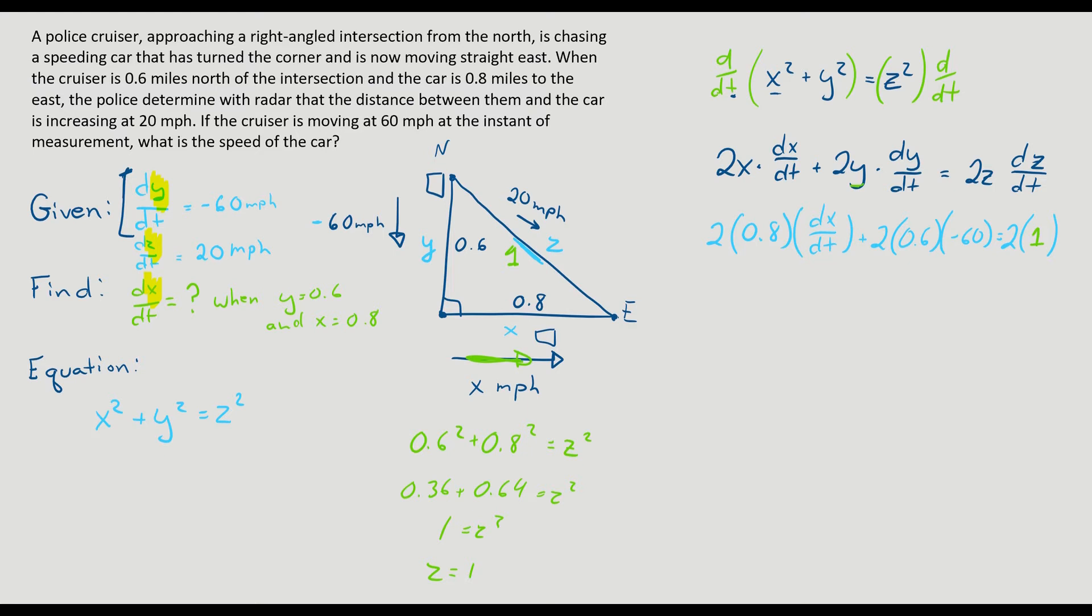And then dz/dt, well, we are given that as 20 miles per hour. Okay, so we only have one unknown, dx/dt, and we're going to solve for that. Let's make this a little easier. Notice I can divide both sides by 2, because it's in common by all of it. So that gives me 0.8 dx/dt. 0.6 times negative 60, that is negative 36. And then I have 1 times 20, which is 20. 0.8 dx/dt is equal to, if I add the 36 over, it equals 56. And then divide by 0.8, divide by 0.8. I have 56 divided by 0.8 gives me 70.